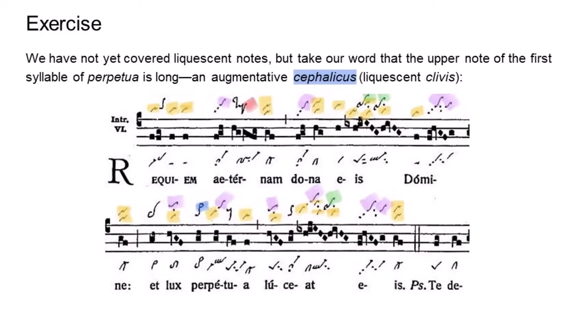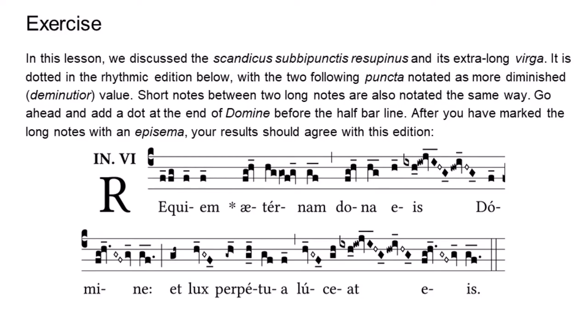We haven't covered liquescent notes yet. Liquescent notes is a complex subject that is really beyond the scope of a presentation on basic neumes. For now, take my word that the upper note of the first syllable of Perpetua is long — an augmentative cephalicus, which is the liquescent form of the clevis. In this lesson, we discuss the scandicus subbipunctus resupinus and its extra-long virga. It is dotted in the rhythmic edition below, with the two following puncta notated as more diminished value. Short notes between two long notes are also notated the same way. We also add a dot at the end of Domine, before the half-bar line, which is strictly editorial. After you have marked the long notes with an episema, your results should agree with this edition.